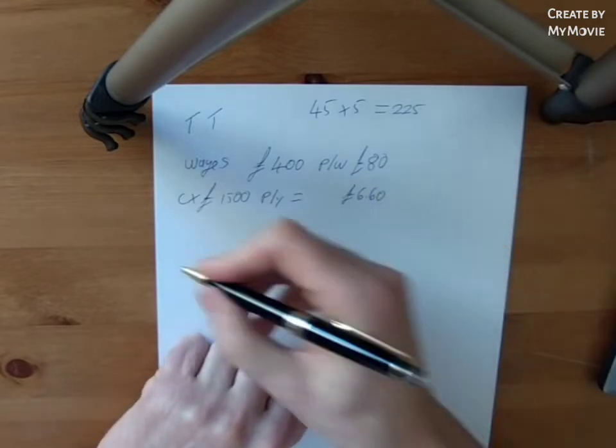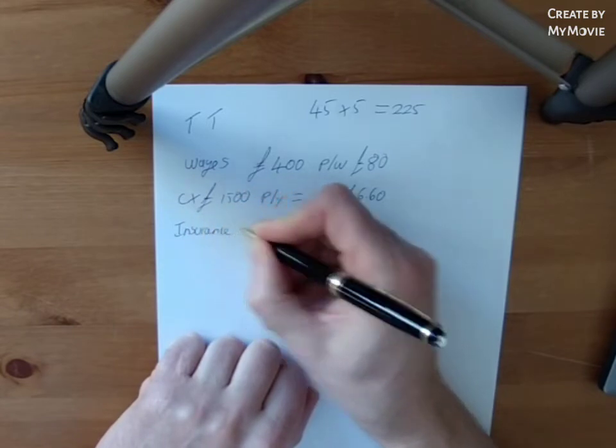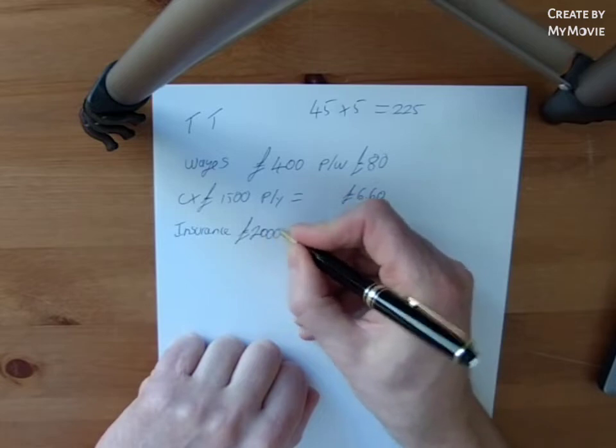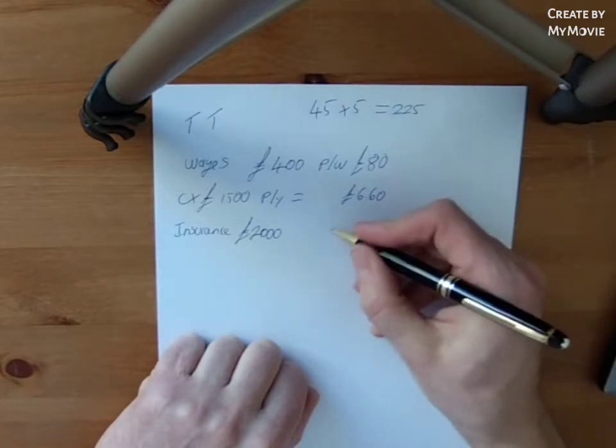What else have we got to worry about? Well, we're going to have insurance. So let's have £2,000 worth of insurance. It goes £8.80.